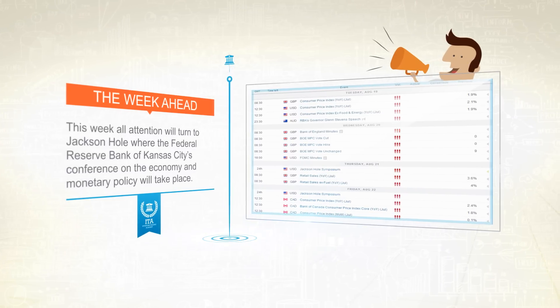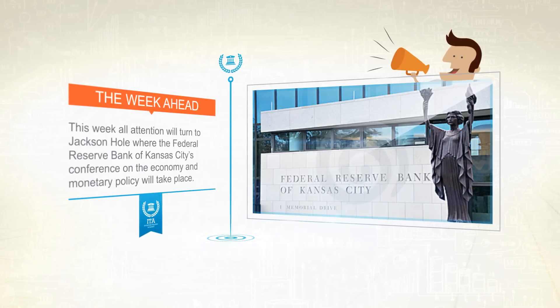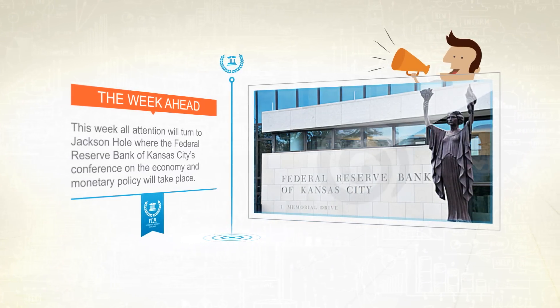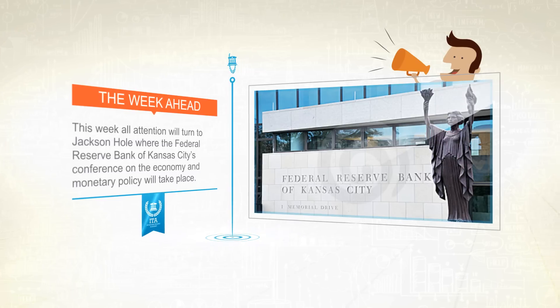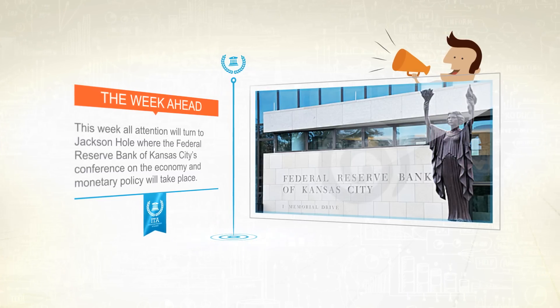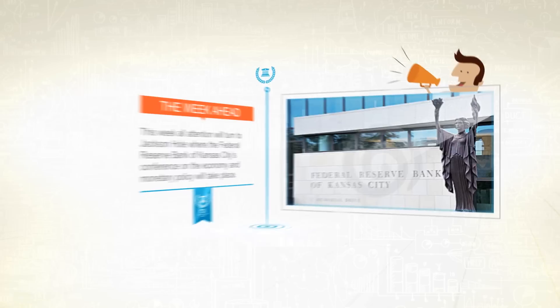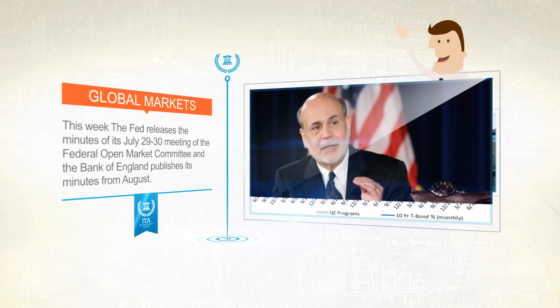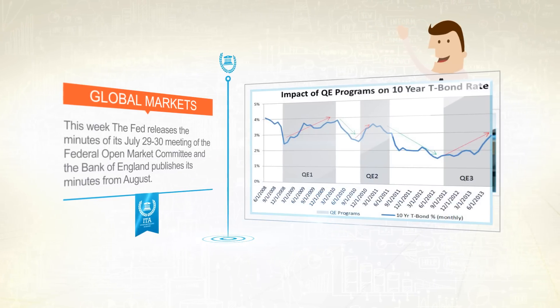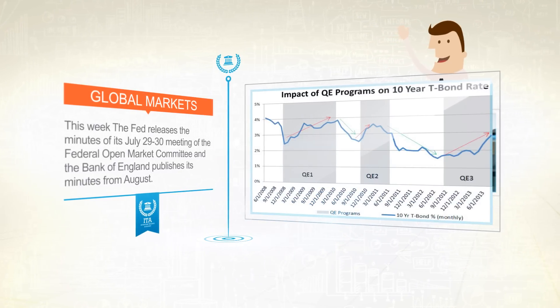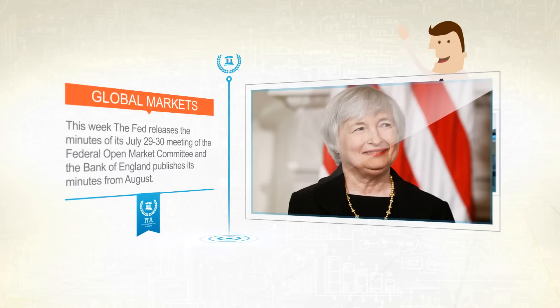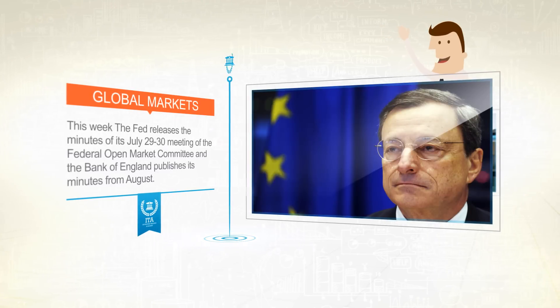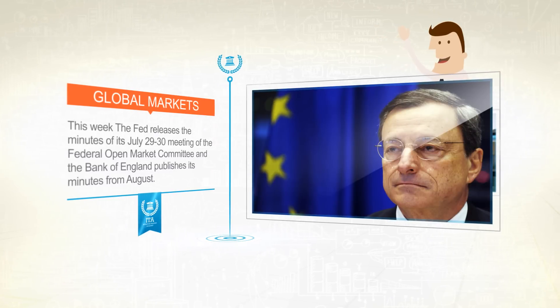This week all attention will turn to Jackson Hole, where the Federal Reserve Bank of Kansas City's conference on economy and monetary policy will take place. This event became world-renowned a few years back when Mr. Bernanke decided to introduce the massive QE program for the US. This year's speakers will include Federal Reserve Chair Janet Yellen and European Central Bank President Mario Draghi.